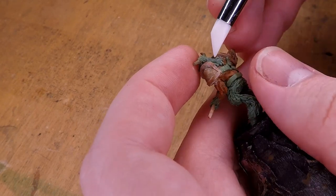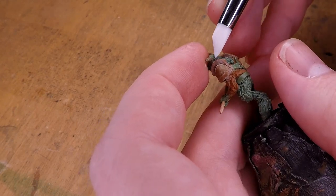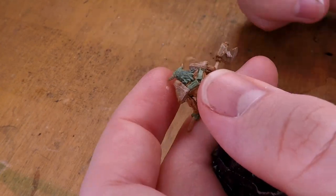And something I didn't think of happening was because the Milliput is a lot harder than green stuff it's actually more brittle and could break.